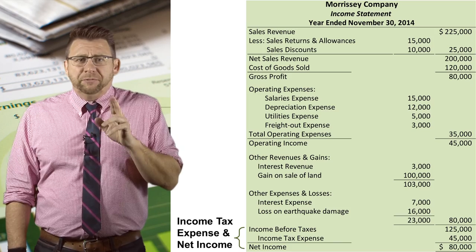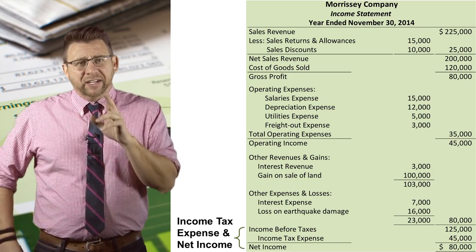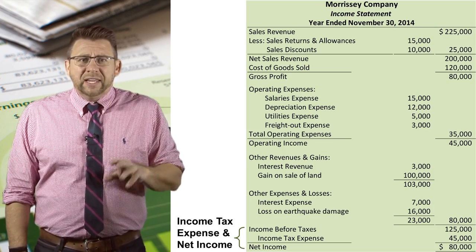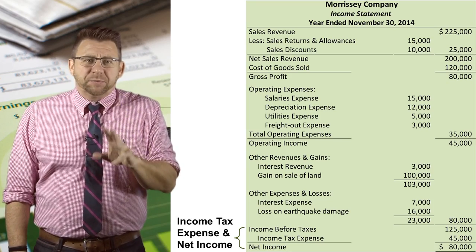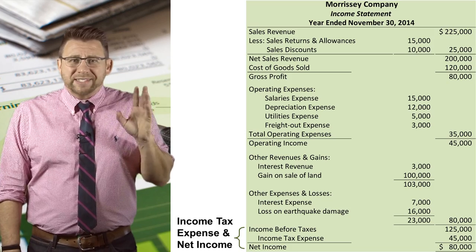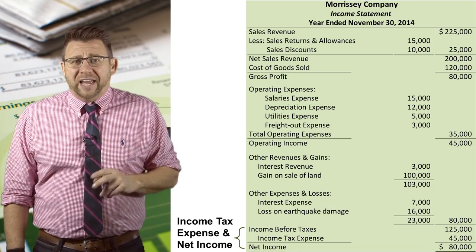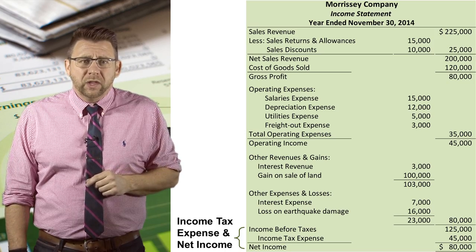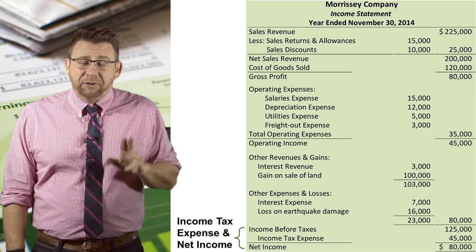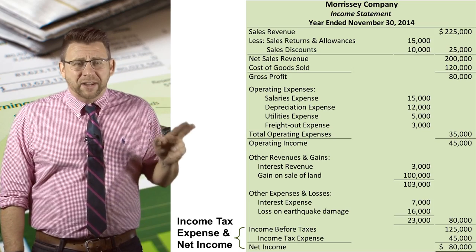The final section before we arrive at net income — at least for an accounting principles course — is the income tax expense section. This expense is reported separately from all other expenses because it's the expense that managers have the least control over. Income tax expense is deducted from income before taxes to arrive at net income.